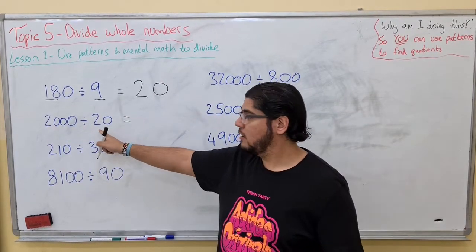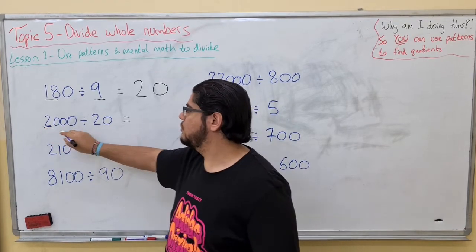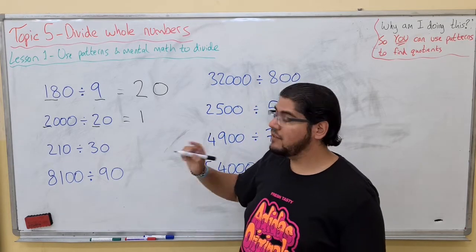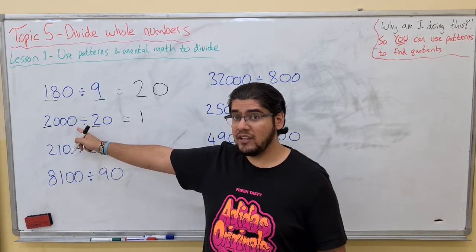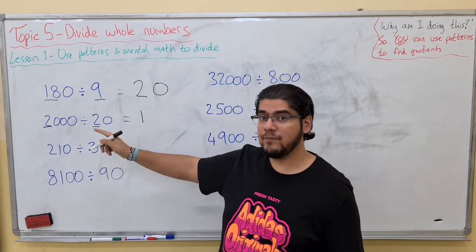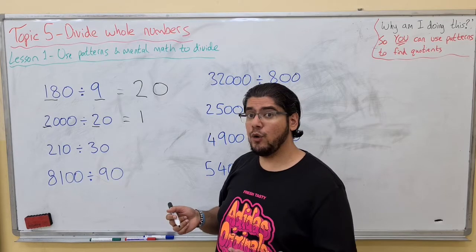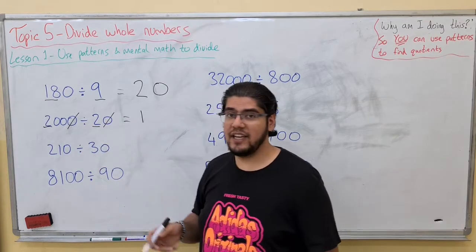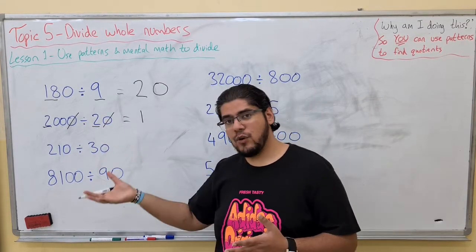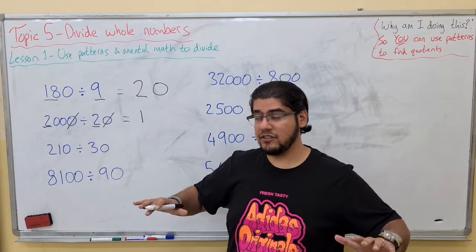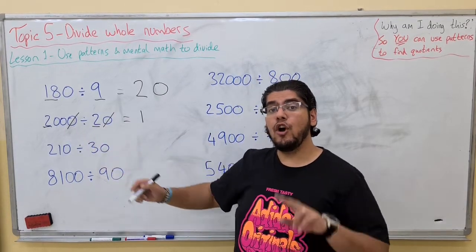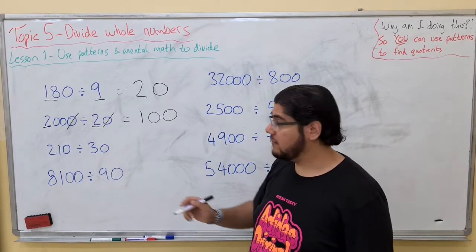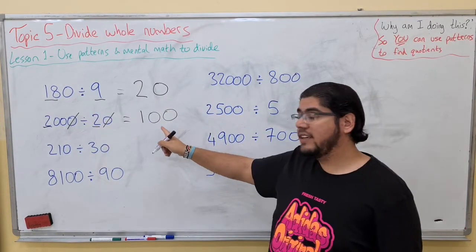Let's take the 2 and divide them. 2 divided by 2 is 1 — any number divided by itself is just 1. Now we have 3 zeros on this side and only 1 on this side; there must be a balance. So what we are going to do: cross one zero from this side and one zero from this side — so we are still balanced. If you take one from one side and one from the other, still balanced. How many zeros are left in the question? Only 2 zeros — add it into the answer. So 2,000 divided by 20 equals 100.